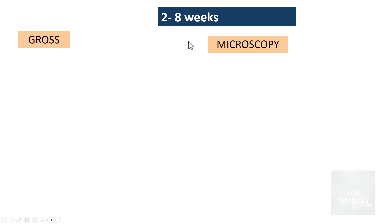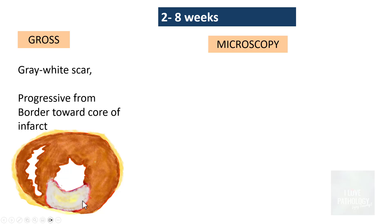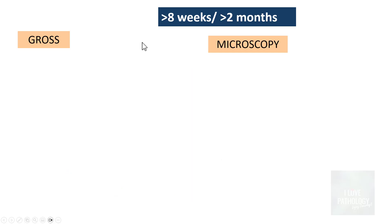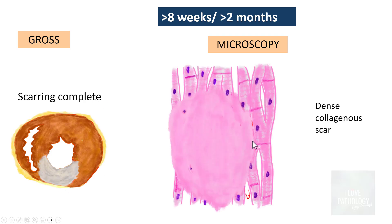Beyond two weeks to eight weeks, a gray-white scar forms progressively from the periphery towards the center of the infarct. Microscopically, collagen deposition increases and cellularity comes down. After more than eight weeks, the scarring is complete and microscopically you see a dense collagenous scar. Beyond two months — whether it is three months, three years, or ten years — you cannot differentiate; it all looks the same dense collagenous scar.